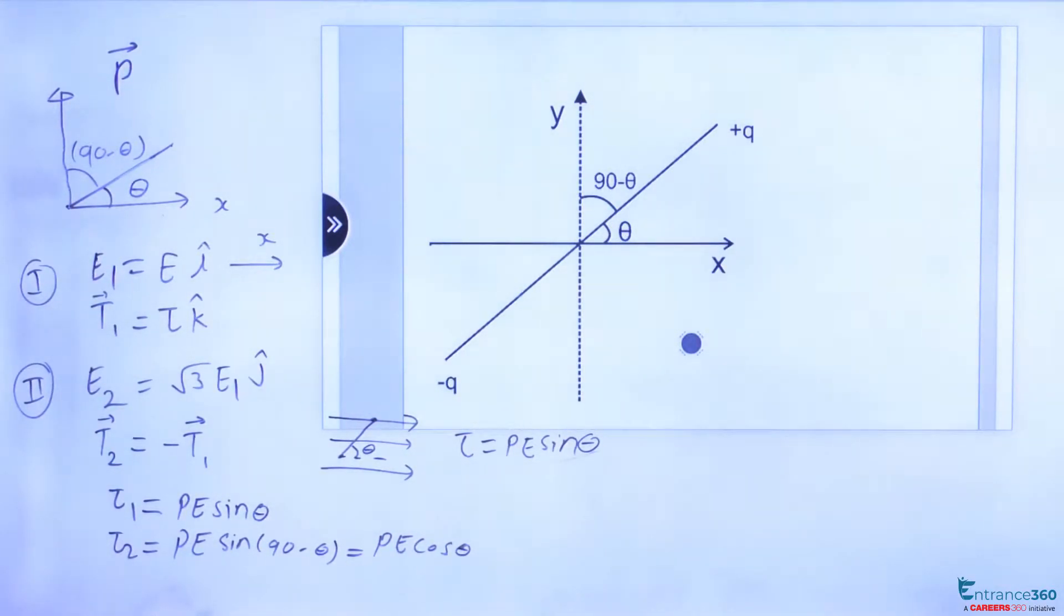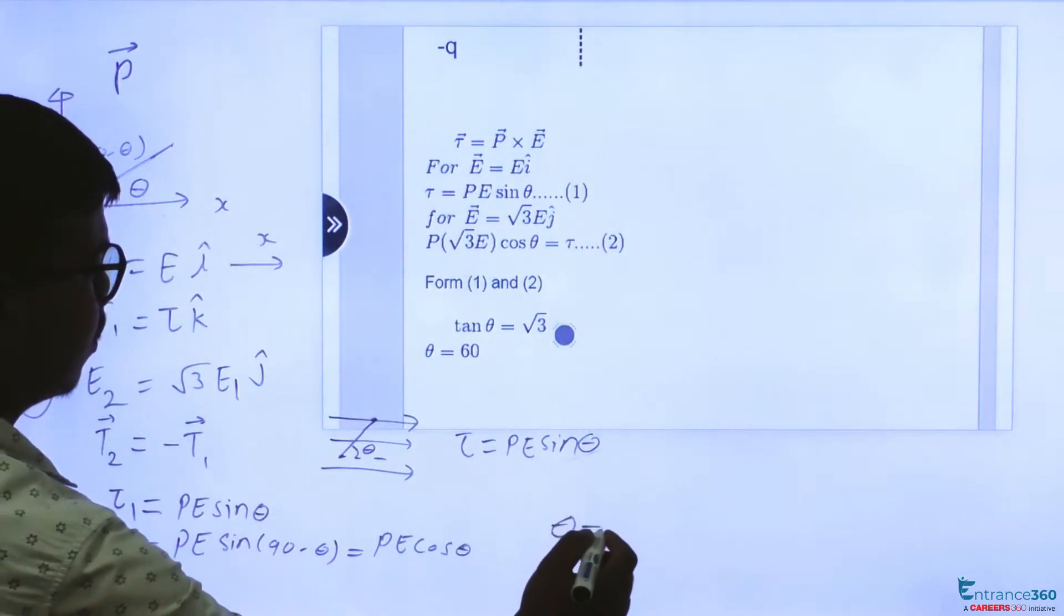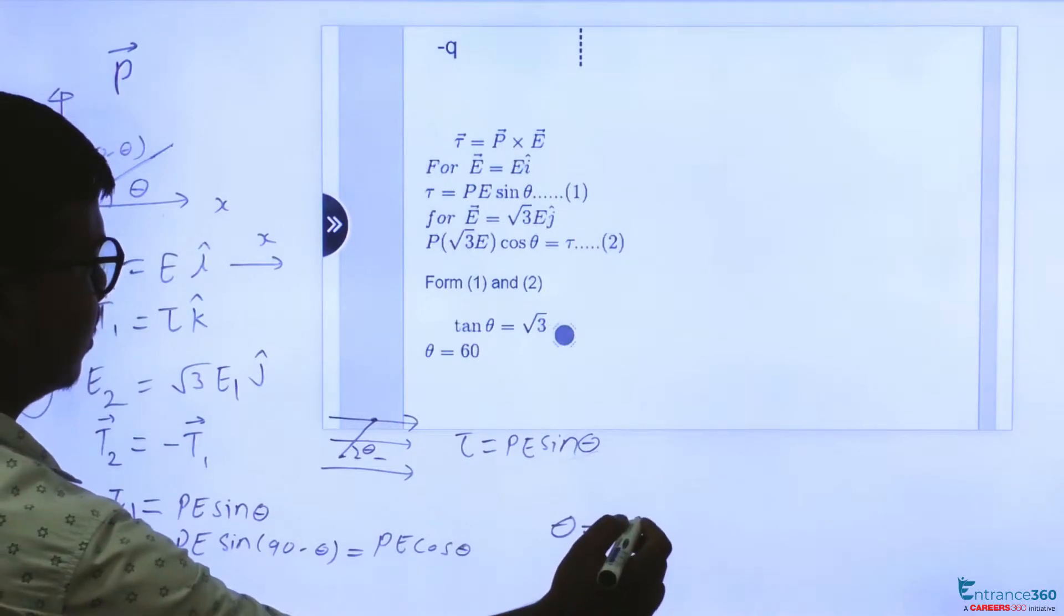So we get two equations. Let's compare them. In first situation we get torque equal to PE sin theta and for second situation when E equals root 3 j cap we put this in this formula. So after getting these two equations we get our value of theta is equal to 60 degrees.